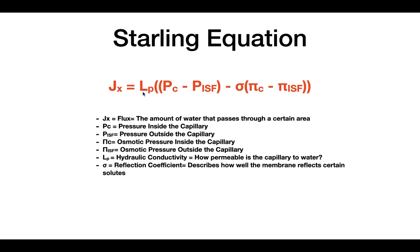Lp, or hydraulic conductivity, basically describes how well water can pass through the wall of the capillary. So if you were to increase the amount of gap junctions, fenestrae, or aquaporins, this would increase the value of Lp and therefore allow more water to pass through. In other words, Lp symbolizes how permeable the capillary wall is to water. The next value is Pc, which is the pressure inside the capillary; Pisf is the pressure outside the capillary.